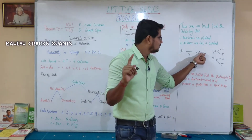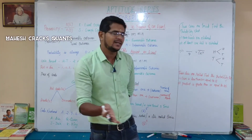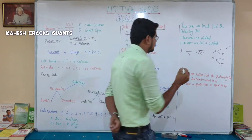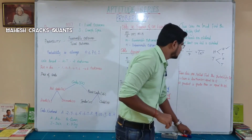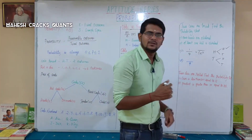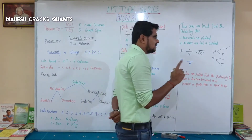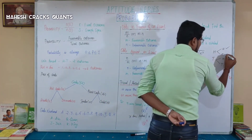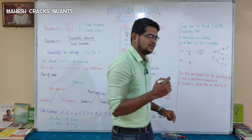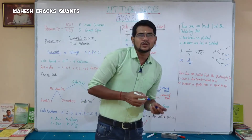First question: probability of 2 heads. From the outcomes — head-head, head-tail, tail-head, tail-tail — only head-head gives 2 heads. So favorable outcome is 1. Answer: 1 by 4. Second question: at least 1 tail. At least one tail means one tail or two tails. Head-tail has one tail, tail-head has one tail, tail-tail has two tails — that's 3 favorable outcomes. Answer: 3 by 4.